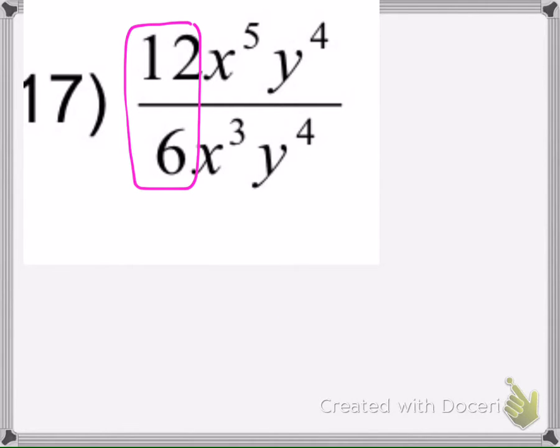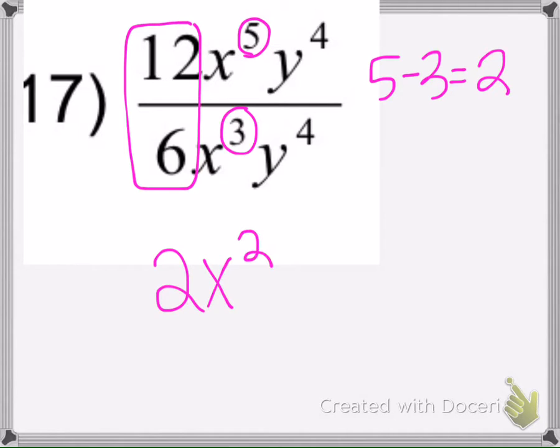Okay, here we have 12 divided by 6, which is 2. Subtract the exponent, so 5 minus 3 is 2. It's positive, so it goes on the top. And then here we have 4 minus 4, which is 0, so if I put y to the 0 there, it just equals 1.